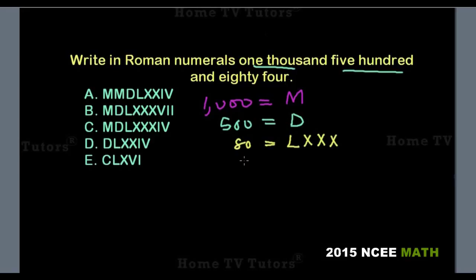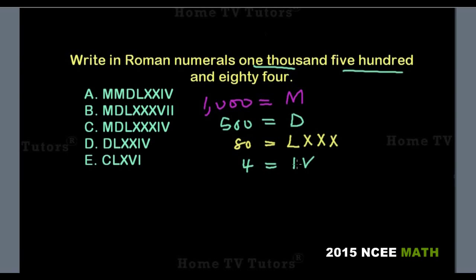Then for 4, it's represented by IV. V is 5. I before V means 5 minus 1, which gives us 4.